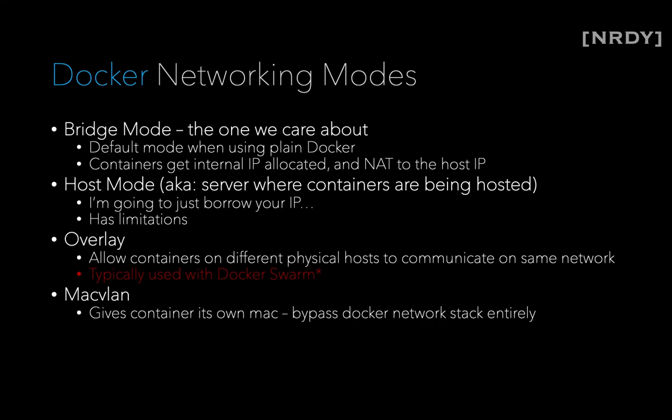The final mode available is called MacVLAN, and this is a cool one. The container gets its own dedicated MAC address and actually bypasses the Docker networking stack. The idea is if you have a legacy app and you want to move it into Docker, you might break things if you start changing things like the MAC address. By doing this you're giving the container a direct pathway onto the network so it can continue to function as it did before it was containerized. It's not something you'll likely run into in your lab unless you just want to play with it, but it is there.